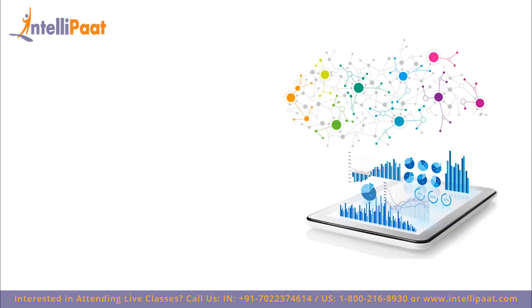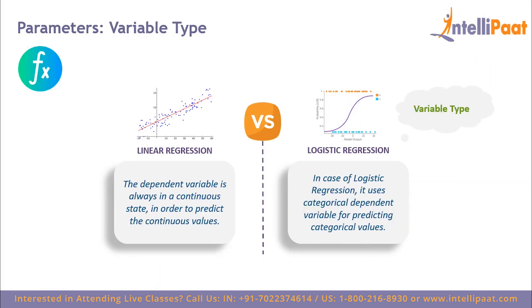Now let's discuss the parameters used to differentiate between the two algorithms. The first parameter is variable type. In linear regression, the dependent variable is always continuous in order to predict continuous values. In logistic regression, it uses a categorical dependent variable for predicting categorical values.